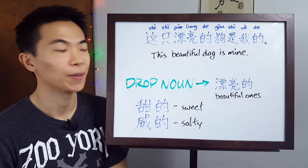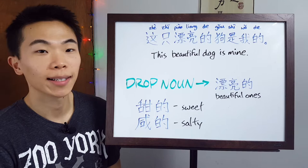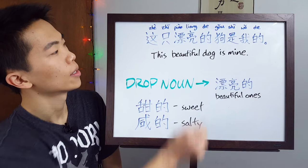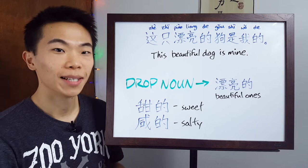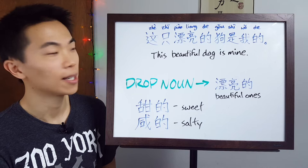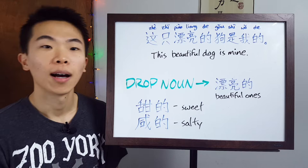So now let's look at a full sentence example: 这只漂亮的狗是我的 — This beautiful dog is mine. 这 is 'this,' 只 is a classifier for dogs, 漂亮 is 'beautiful,' 的狗 is 'dog,' 是 is 'is,' and 我的, which we learned last week — 我 is 'I' and 我的 means 'mine.' So we covered both weeks in one sentence, showing two ways of using 的.